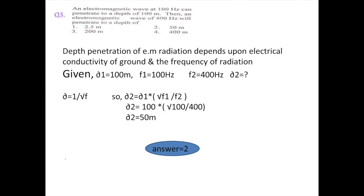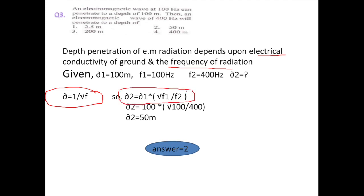The 100 Hertz wave penetrates to a depth of 100 meters. What will be the depth for 400 Hertz? The key concept is that depth penetration of electromagnetic radiation depends on two things: electrical conductivity and the frequency of the radiation. The relation between depth and frequency is that depth is inversely proportional to the square root of frequency. Using this formula, D2 = D1 × √(F1/F2). Substituting values, D2 equals 50 meters. This question is from Part C of 2015.